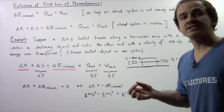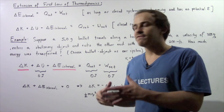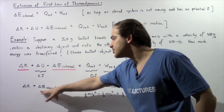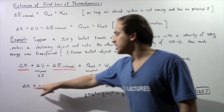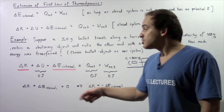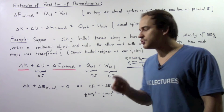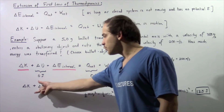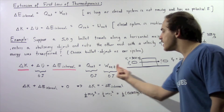Our bullet loses velocity — where does that velocity go? From this equation, we see that the kinetic energy that is lost is transferred into the internal energy of the bullet and object system. So the change in kinetic energy plus the change in internal energy equals zero. Whatever energy our bullet loses goes into increasing the internal energy of the bullet and the block as the bullet travels through it. Rearranging, the change in kinetic energy equals the negative of the change in internal energy.